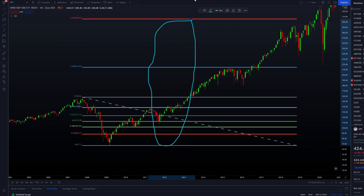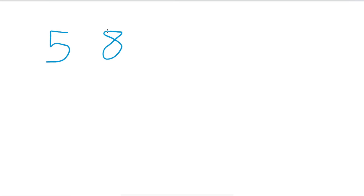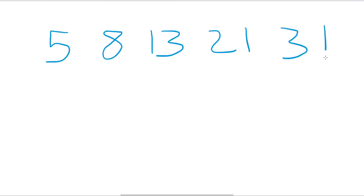The 2.618 extension is 162% above the previous high, or equivalently, the whole move from the very low is 262%. Now let's look at where these numbers come from — they are derived from the Fibonacci sequence. Starting with numbers like 5 and 8: 5 + 8 = 13, 8 + 13 = 21, 13 + 21 = 34, and so on. This is the special sequence called the Fibonacci numbers.